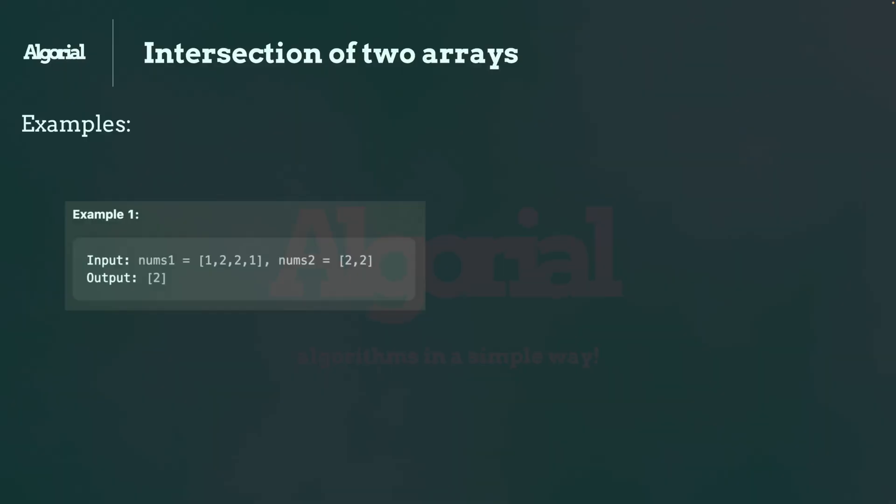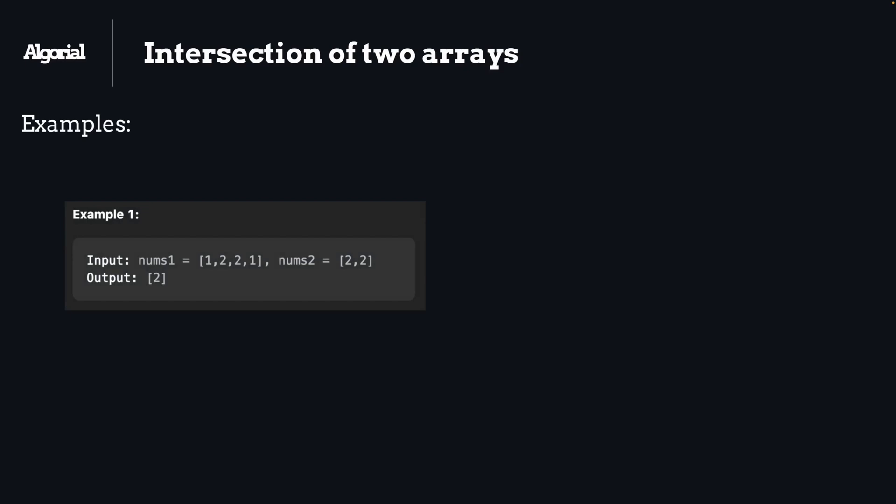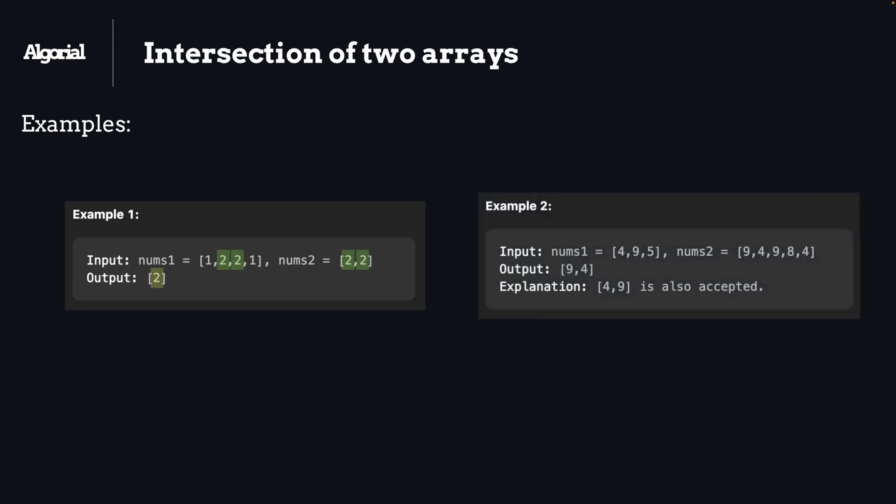First example here we have two arrays and we're only looking for numbers that are shared in between these two. There's only two in this case so we will return it as a result. Second example we have two arrays again but there's only nine and four shared in between these two arrays so again we will return them as a result.